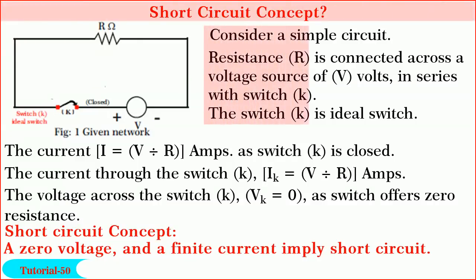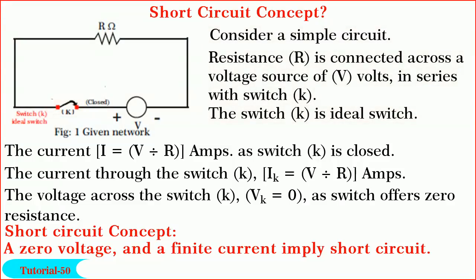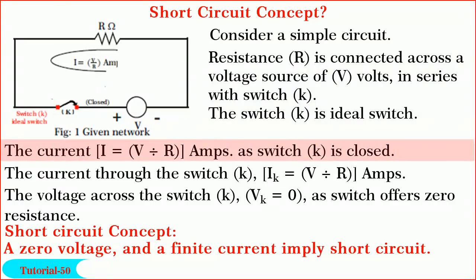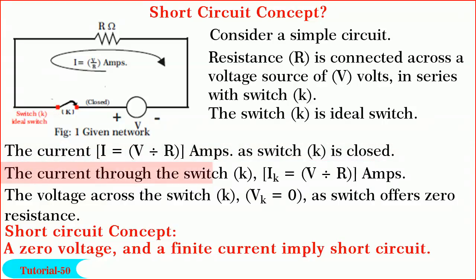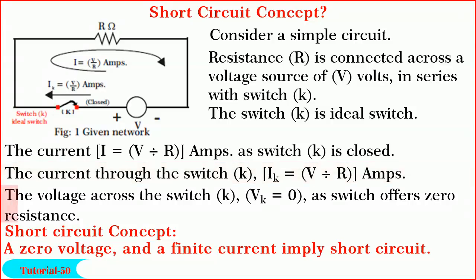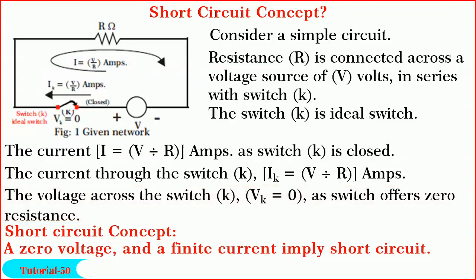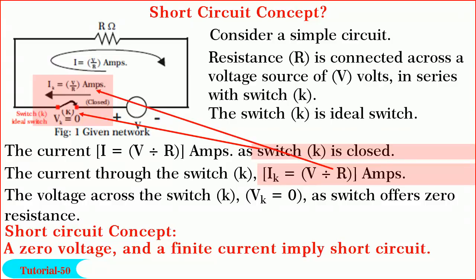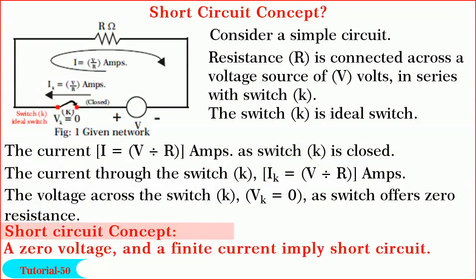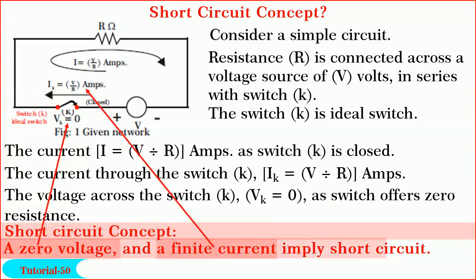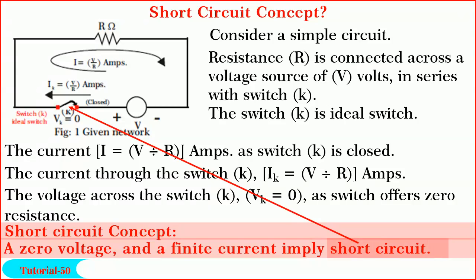Next, we shall take up short circuit concept. Consider the same simple circuit, but this time the switch K is closed as shown. Therefore, the current I in the circuit is equal to V divided by R amperes. So, current through the switch K also is equal to V divided by R amperes as the loop is closed now. But, voltage across the switch VK now is equal to zero as the switch offers zero resistance. So, observe the facts around the switch K. The switch K is closed. Current through it is V by R amperes, or we can say it is finite. Whereas, voltage across the switch VK is equal to zero. So, the short circuit concept states that a zero voltage and a finite current imply short circuit. Very, very interesting. Isn't it friends?